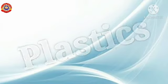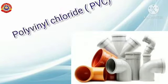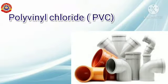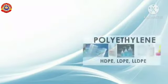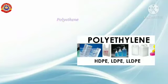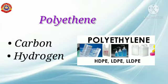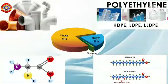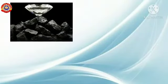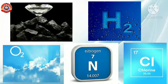Now let's examine the elements present in plastics. Have you heard of PVC — polyvinyl chloride? It is one of the plastics that contains the elements carbon, hydrogen, and chlorine. Polyethylene, otherwise known as poly ethyne, contains the elements carbon and hydrogen. In all these examples you can see that the elements carbon, hydrogen, oxygen, nitrogen, chlorine, etc. are non-metals.